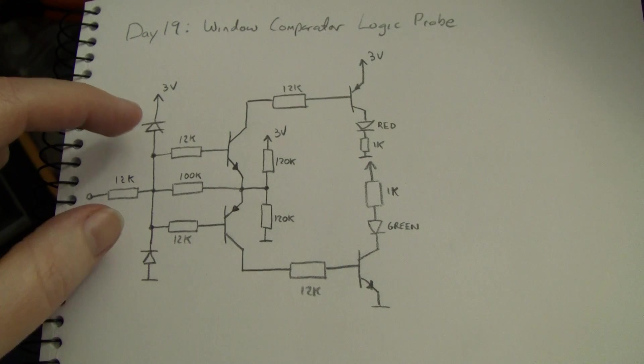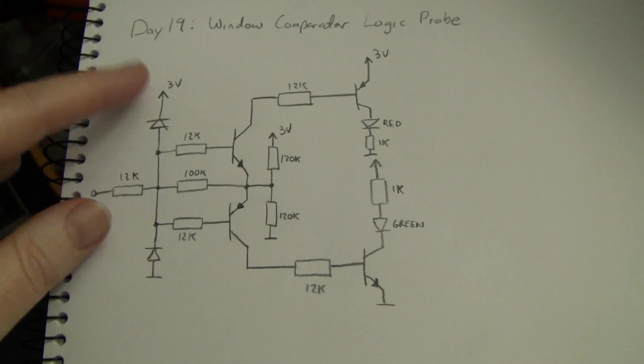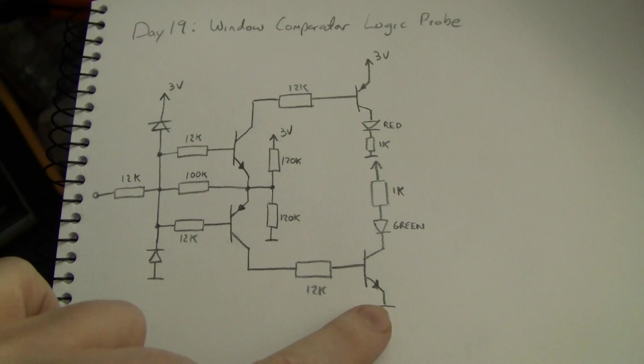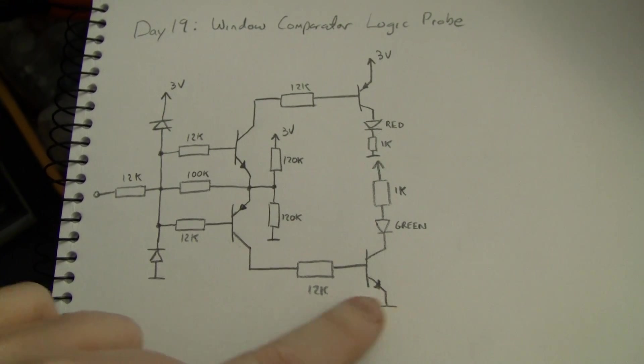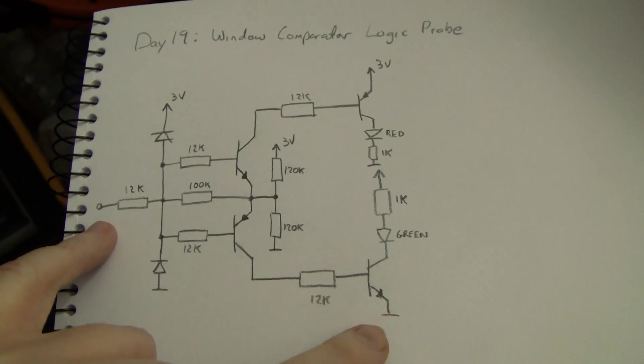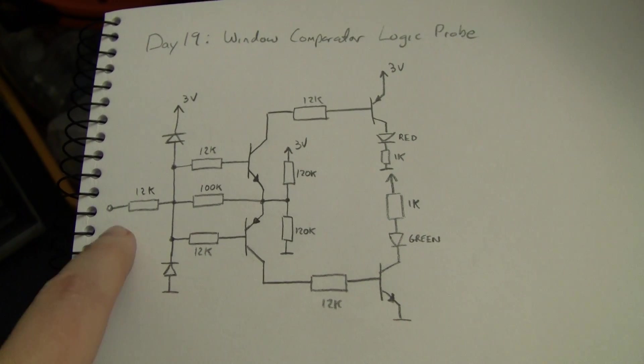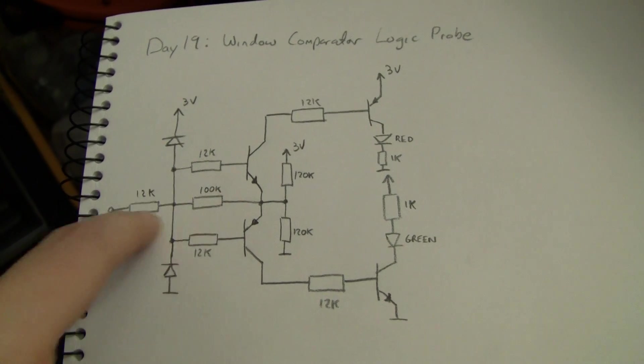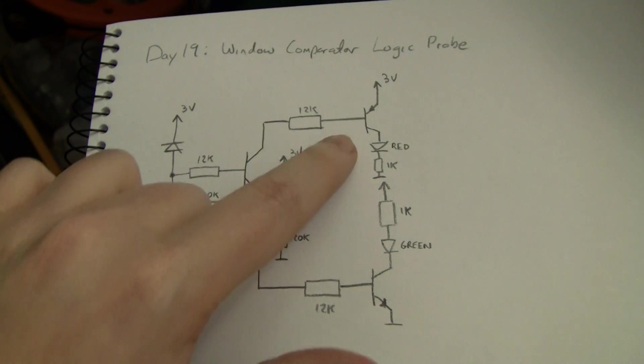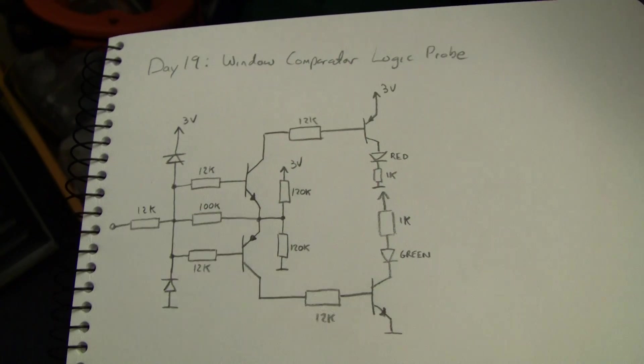There's also some protection diodes, but they're only there for when the input's above or below ground. So this whole thing's obviously relative to ground, you have to ground the circuit. It's not a one input probe like all logic probes, it has to have a ground reference. When the voltage exceeds this base emitter drop and this transistor starts to turn on, it turns on this PNP and turns on the red LED.